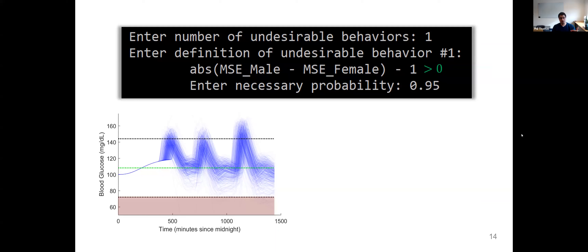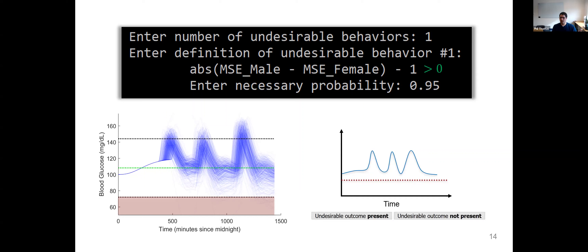Back to the diabetes example — low blood sugar is especially dangerous, and we want to ensure we don't inject so much insulin that we cause hypoglycemia. How could a medical professional say what undesirable behavior means? What if they can look at a plot of someone's blood sugar throughout the day, where hypoglycemia is when it goes below a threshold — the dotted red line — and label plots as undesirable outcome present or not present. This could be another interface. The safety guarantee would be: we will not increase the frequency of this undesirable outcome relative to whatever solution is currently being used, with probability one minus delta.